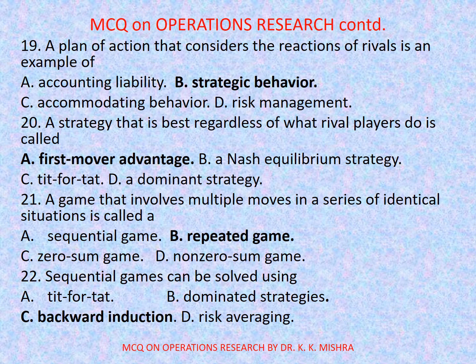Question number 22: Sequential games can be solved using — options are: a) tit-for-tat, b) dominated strategies, c) backward induction, d) risk averaging. Correct option is c) backward induction.